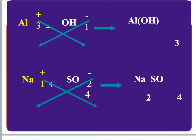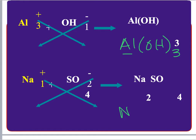We can use the crisscross rule for these as well. For aluminum hydroxide: aluminum has a 3+ charge, hydroxide has a 1− charge, so we need three hydroxide ions — written as Al(OH)₃. For sodium sulfate: sulfate has a 2− charge, sodium has a 1+ charge. Crisscrossing gives Na₂SO₄. If the subscript is just one, we don't write it.